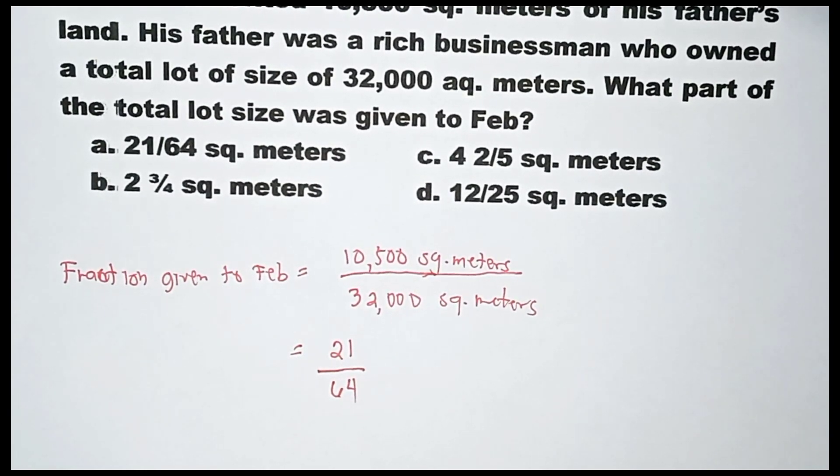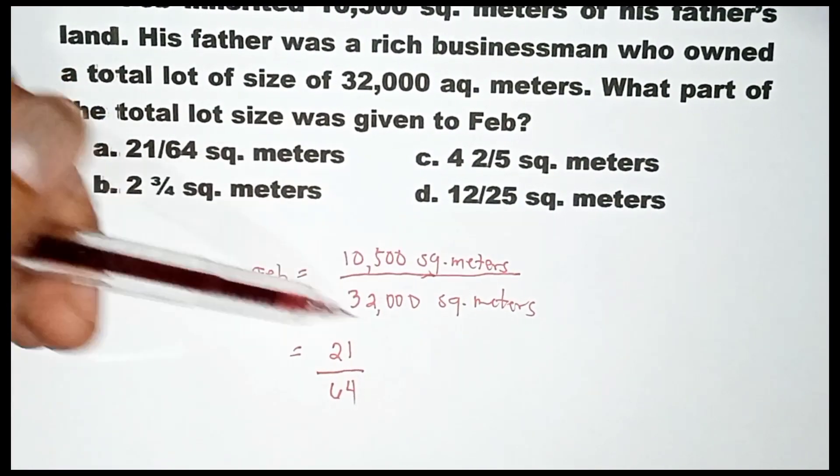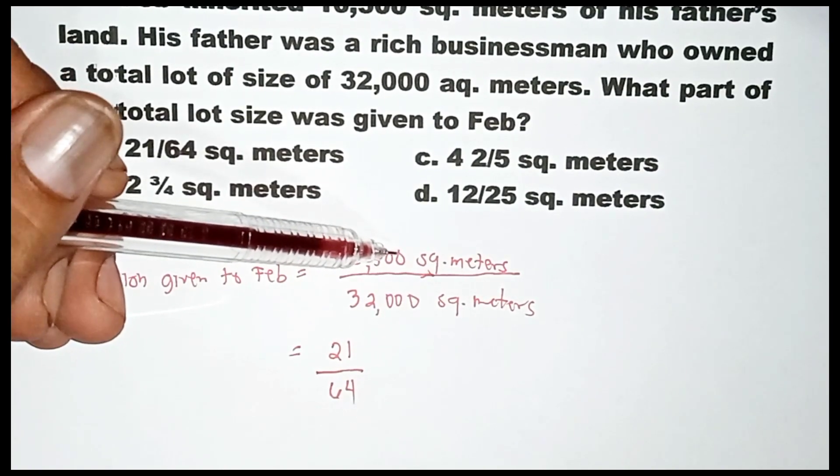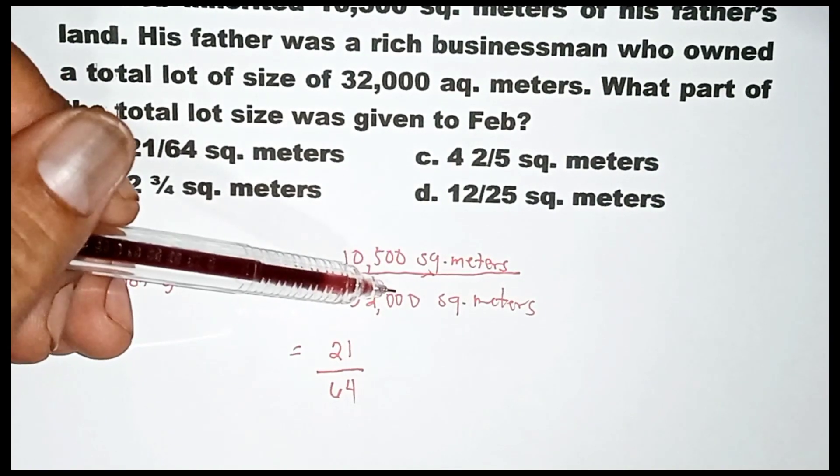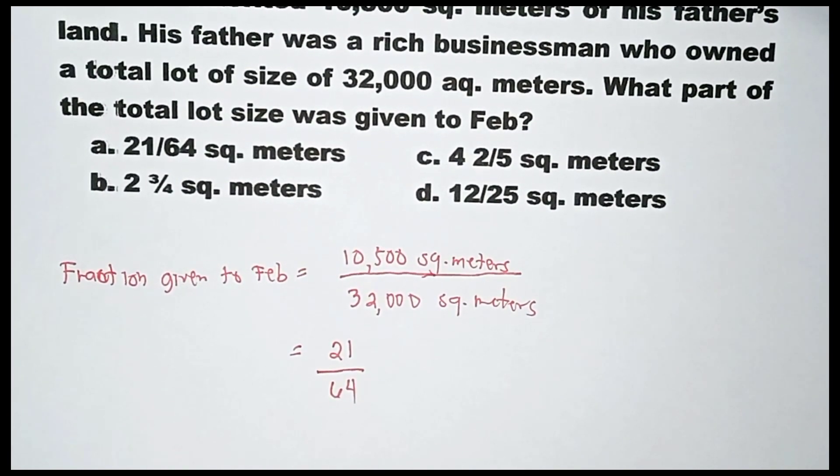Ang pagkuha lang natin is kailangan mag-divide dito by 500, or kunin mo yung common factor, or simply tanggalan ng dalawang zero. So 105 over 320 mag-arrive din dito sa 21 over 64 na sagot.